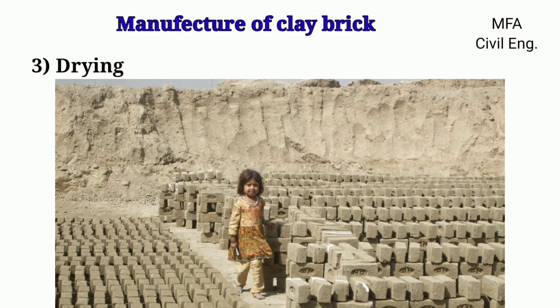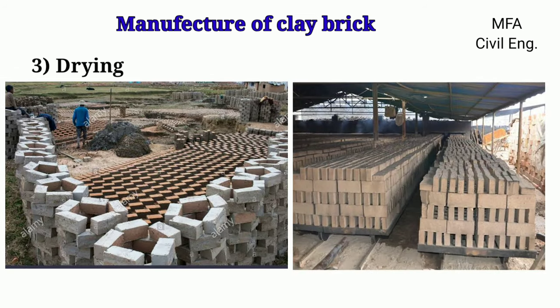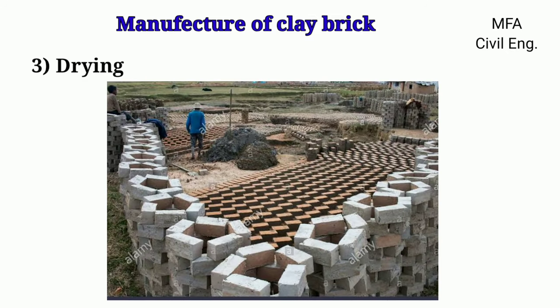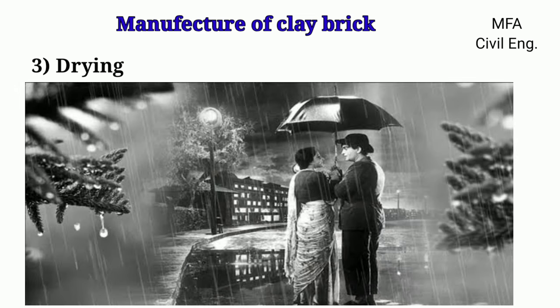Drying is a process where the first objective is to evaporate all the superfluous moisture contained at the time of molding without damaging the brick, and the second objective is to make the bricks hard enough to handle during operations in a clamp or kiln for burning. In natural drying, molded raw bricks are arranged in a row on their edges on raised ground called a hex, keeping space between bricks for air circulation. Bricks are kept in open air for one to two weeks. Natural drying is not desirable in the monsoon season.